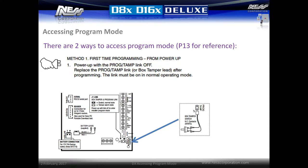The first method involves powering up the system with the program link open. First, ensure that the system is powered down, remove the J1 link or open the box, and then power up the system. This will place the system directly into installer programming mode without defaulting the panel.